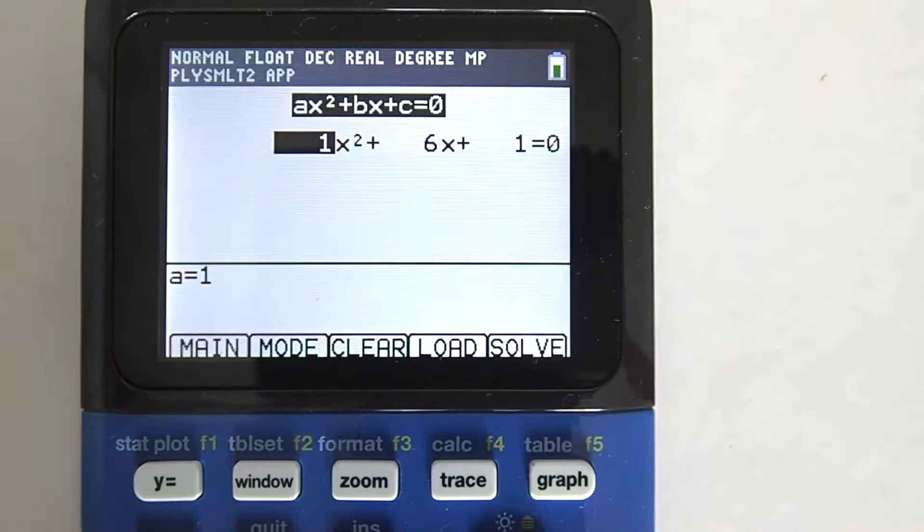I am going to get out of this polynomial root finder app and go to the y equals screen. To get out of this app go to the main menu tab by pressing the y equals key here. And then go down to 6 quit app and press the enter key. Now we are back to the home screen.